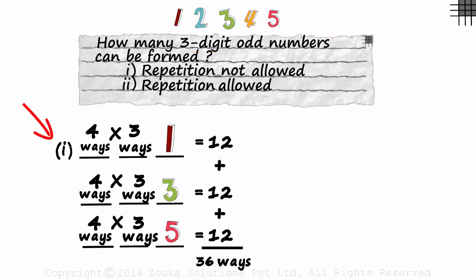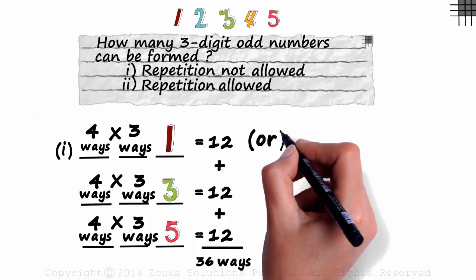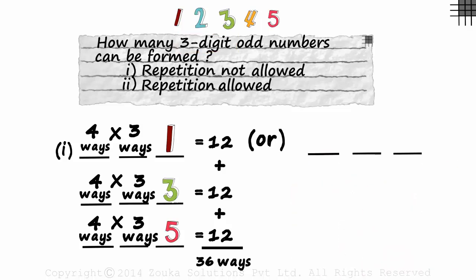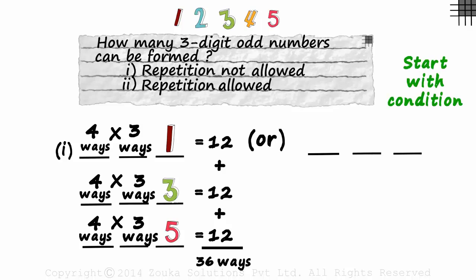This was slightly long. Now that we know the concept, let's look at a quicker way to solve it. We know it is a three-digit number and the condition is that the number should be odd. Remember a golden rule: whenever we are given a condition, start with it. As the condition is about the number being odd, it depends on the units digit, so we start with the units digit slot.